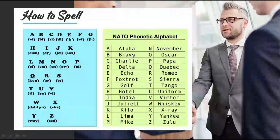Saya ulang ya. Alpha, Bravo, Charlie, Delta, Echo, Foxtrot, Golf, Hotel, India, Juliet, Kilo, Lima, Mike, November, Oscar, Papa — perhatikan: Quebec, bukan Quebec. Romeo, Sierra, Tango, Uniform, Victor, Whiskey, X-Ray, Yankee, Zulu. Jadi nggak akan ketuker. D dan C nggak akan ketuker — Delta and Tango.